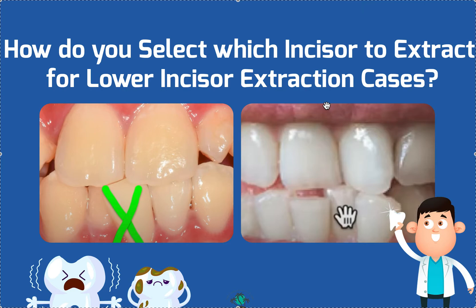Unless the patient is Class III, then you do a lower incisor extraction. There are some straight-wire companies and bracket systems — I'm not going to mention who — that take out lower incisors way more aggressively than needed. It's fast and easy, but you want to make sure you're explaining the risks, benefits, and alternatives to the patient so they understand their options — maybe distalization (making sure there are no impacted or erupted third molars blocking space), arch expansion, lots of IPR. The lower incisor extraction is quick, dirty, and easy.